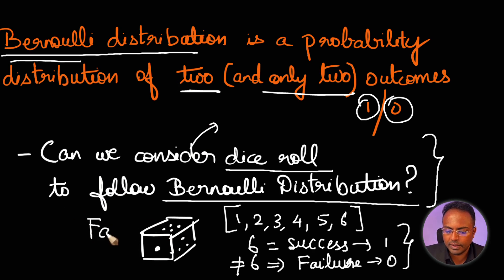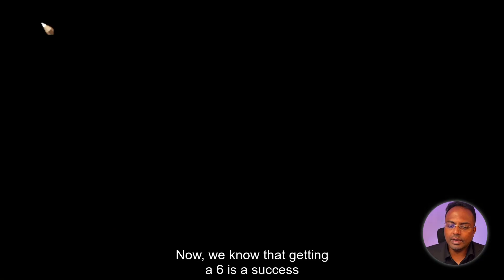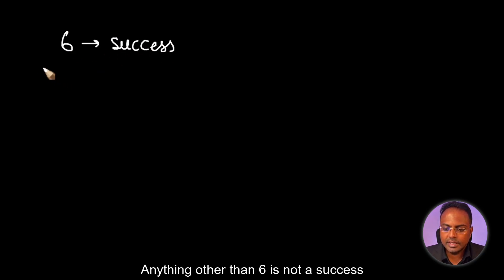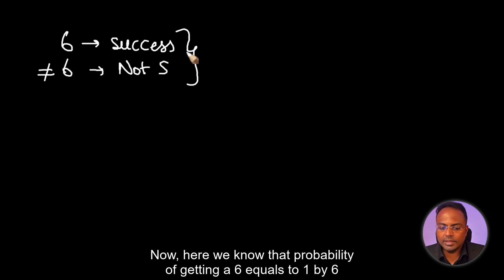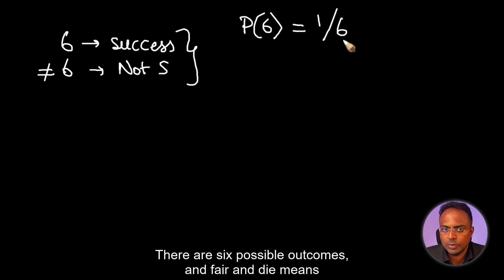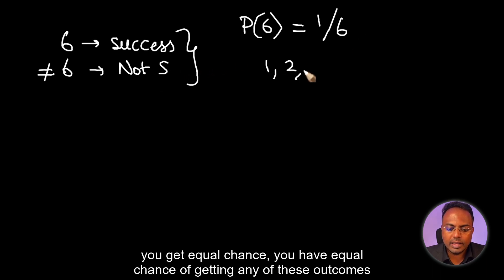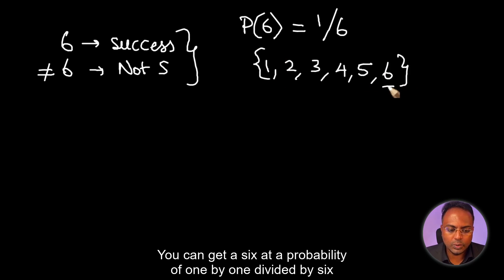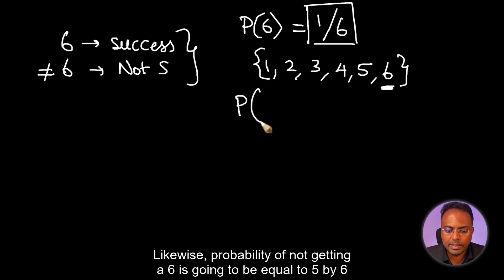Assuming this die to be a fair die, can we compute the probability of success? We know that getting a 6 is a success and anything other than 6 is not a success. The probability of getting a 6 equals 1/6, since there are 6 possible outcomes and a fair die gives equal chance of any outcome. Likewise, the probability of not getting a 6 is 5/6.